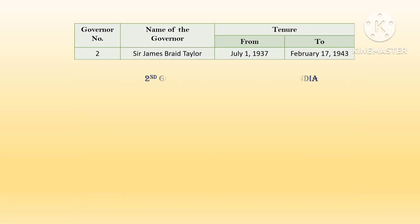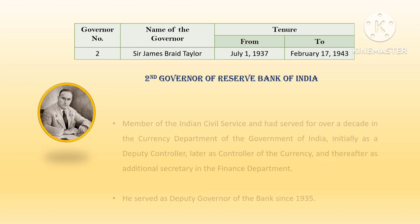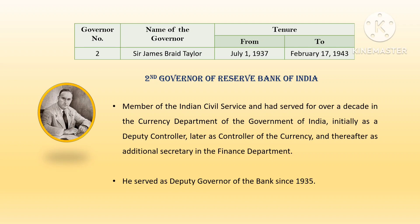The second governor was Sir James Brett Taylor. His tenure was from July 1, 1937 till January 17, 1943. He was a member of the Indian Civil Service and had served over a decade in the Currency Department of Government of India. He was initially a deputy collector, later collector of the currency, and thereafter additional secretary in the finance department. He served as deputy governor of the bank since 1931.